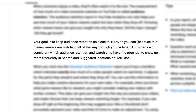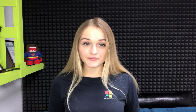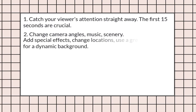Here is what YouTube says: videos with consistently high audience retention and watch time have the potential to show up more frequently in search and suggested locations on YouTube. To maximize audience retention: catch your viewers' attention straight away and get to the meat of the question without empty chatter. The very first 15 seconds of your video are crucial — people judge a video based on those first seconds. Change camera angles, music, and scenery. Viewers will get bored if you stand still throughout the video. Consider adding special effects, changing locations, or using a green screen for a dynamic background.